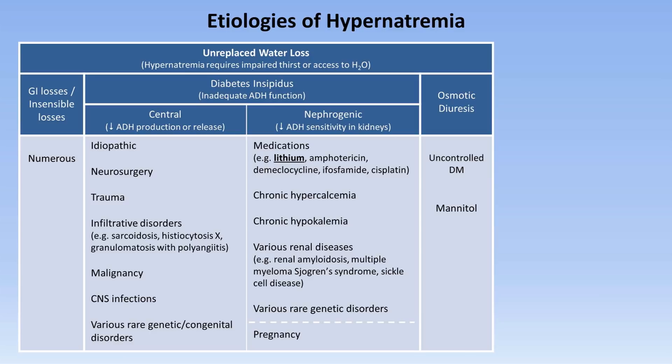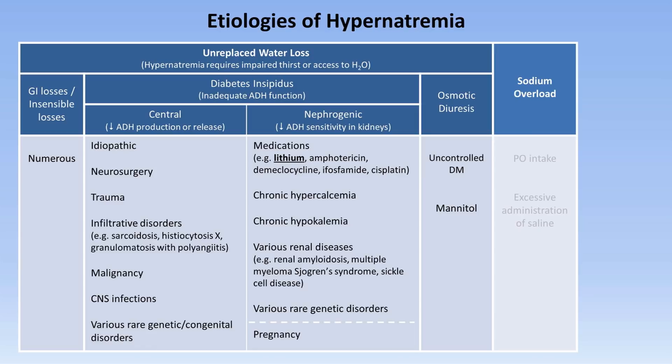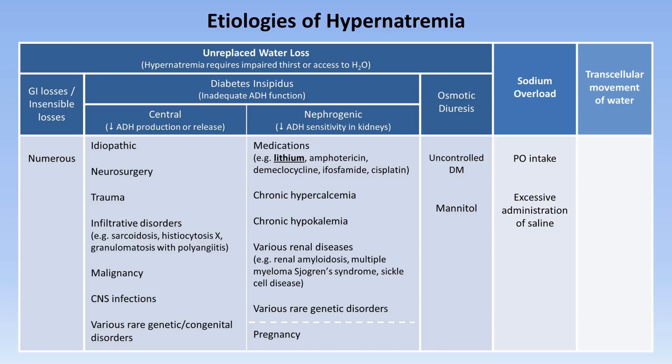Another occasional cause of osmotic diuresis is mannitol, a medication often given specifically for the purpose of inducing this for several uncommon indications. Primary sodium overload can also occur via oral intake or excessive administration of IV saline, though the amount of salt needs to be quite excessive — an extra couple of shakes from the salt shaker at dinner won't come remotely close. Finally, transcellular shift of water into cells leading to acute hypernatremia can rarely occur as a consequence of the rapid breakdown of glycogen into lactate during states of extreme metabolic activity, such as extreme exercise or seizures, and usually resolves within 15 minutes of the activity stopping.